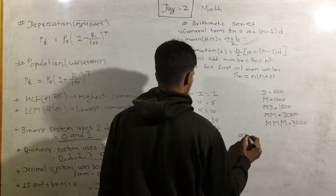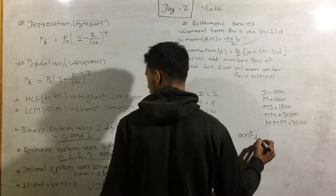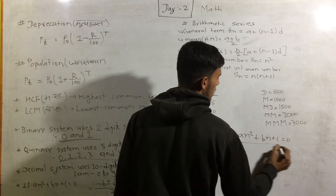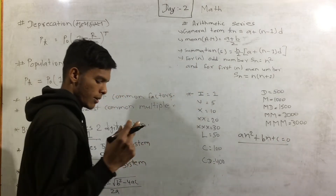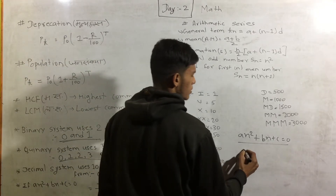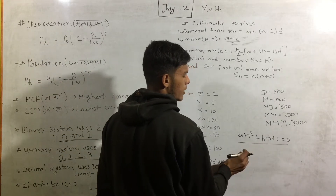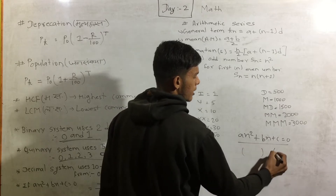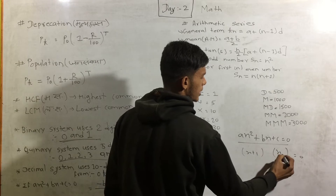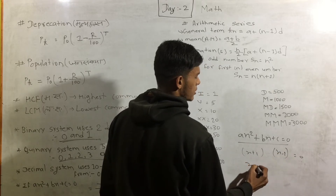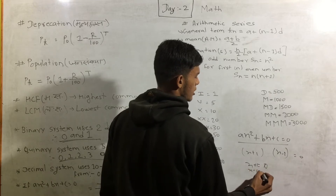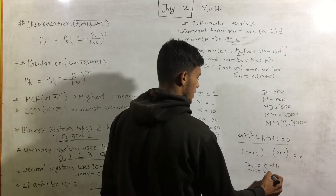x squared plus bx plus c equals 0 — this is the quadratic equation. So x plus 1 times x minus 1 equals 0, meaning x plus 1 equals 0 and x minus 1 equals 0.